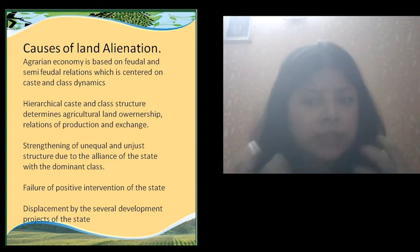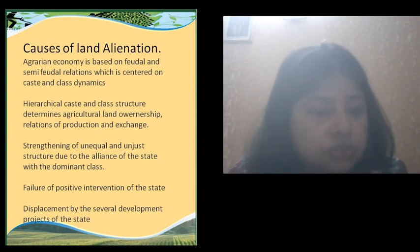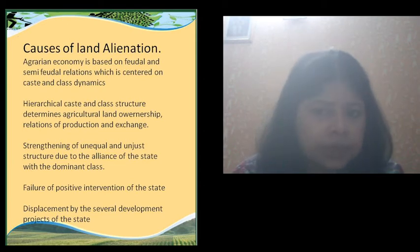The strengthening of unjust structures through alliance with the state and the governing class is one of the key parameters to understand.